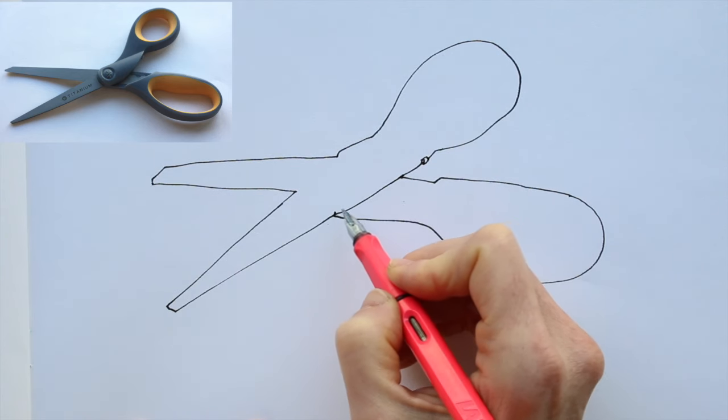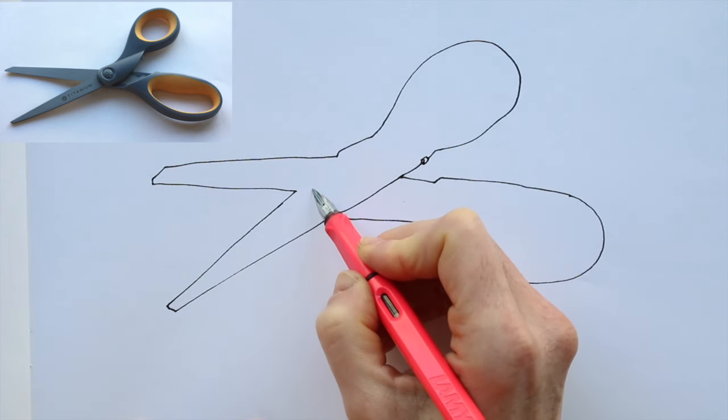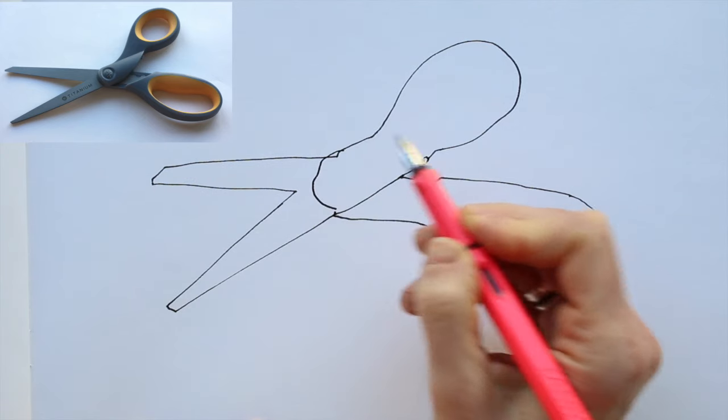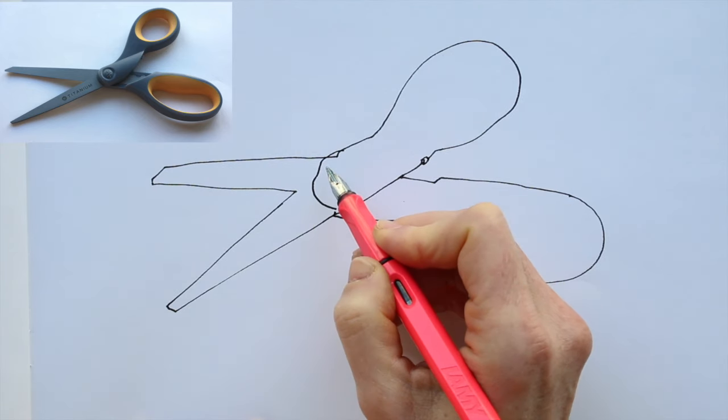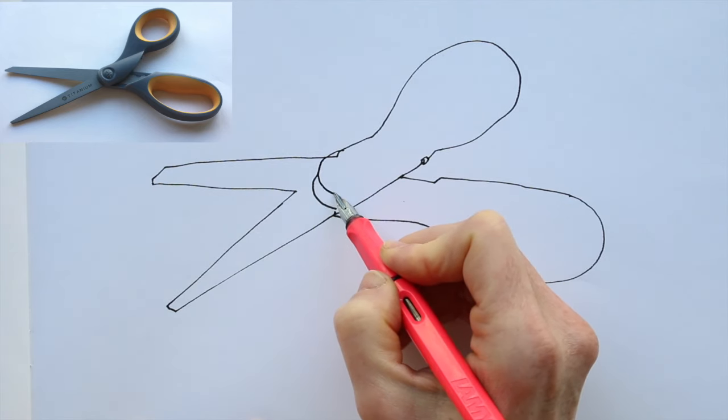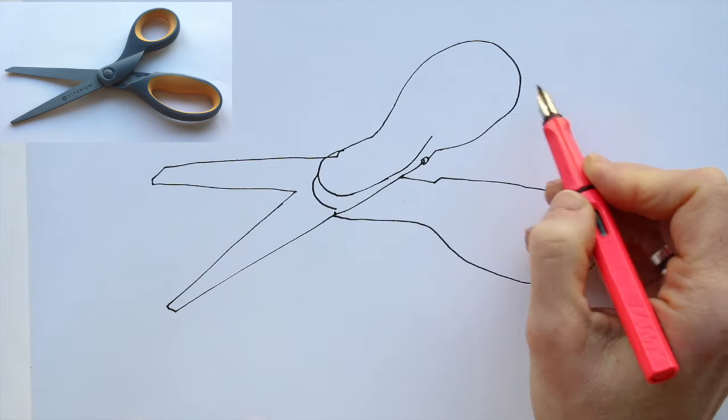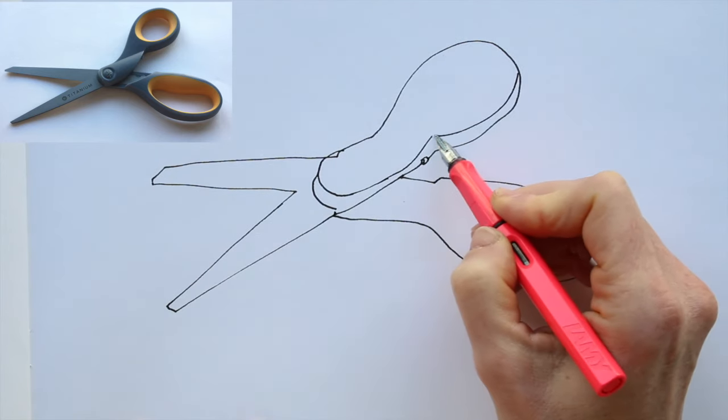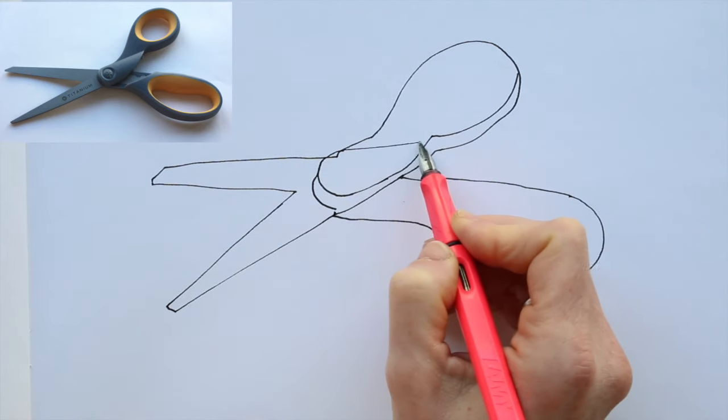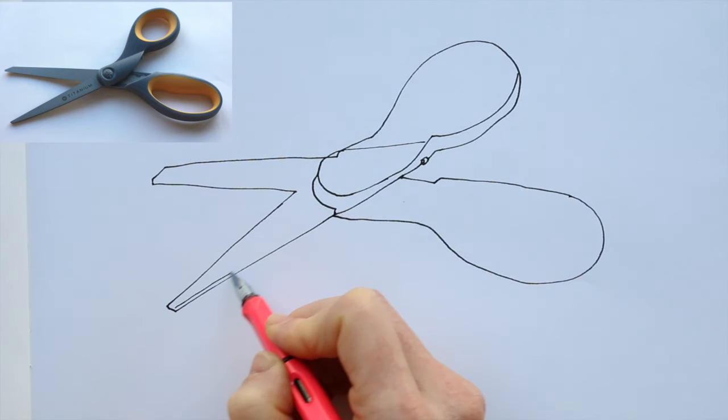Now that the contour is done, start filling the shape. Keep looking at your subject all the time and keep following your eyes with your pen. Trust your eyes. Take your time. Only when you slow down will you be able to draw what you see, instead of drawing what you think you know or what you think you see.